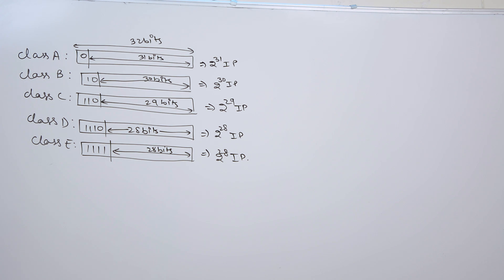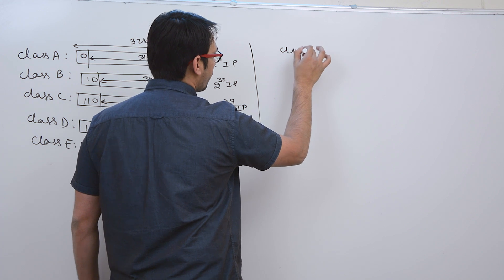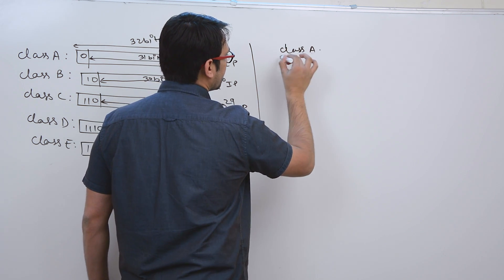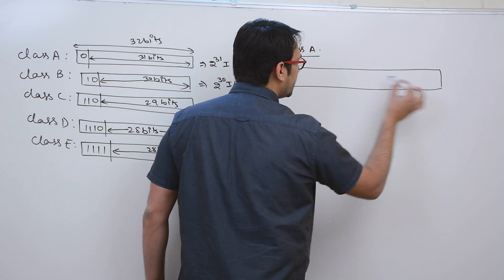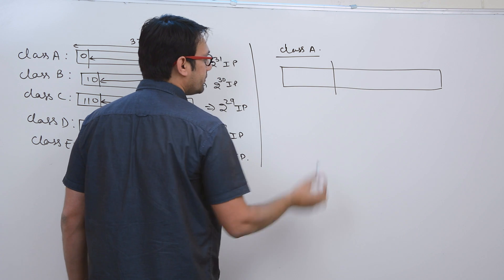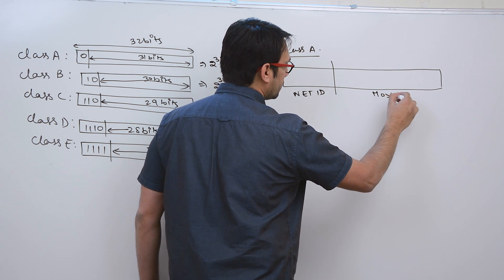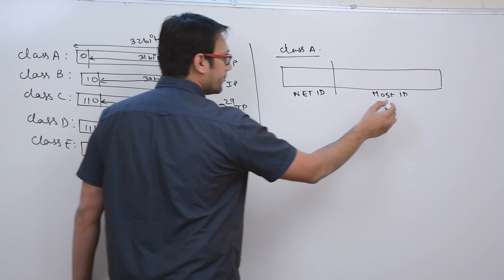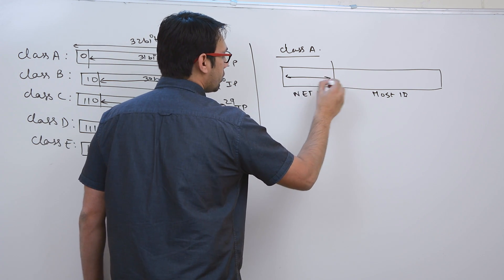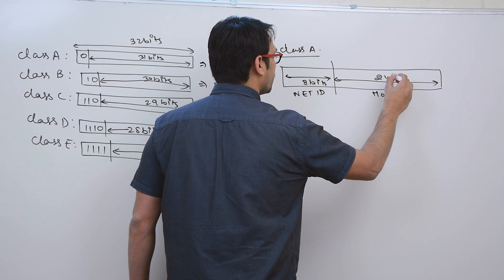We use a dotted decimal representation to represent these IP addresses. Let us discuss about the class A IP address. In case of class A, the complete IP address is divided into 2 parts: the network ID and the host ID. The network ID is of 8 bits, and the remaining bits are used for host ID, therefore the host ID will be of 24 bits.